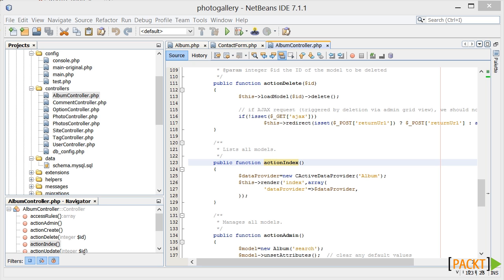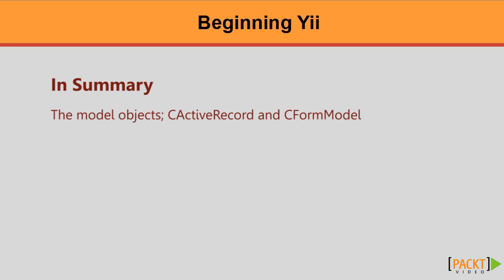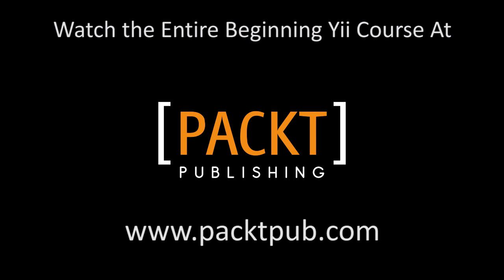The view can then iterate through the records itself. So in this session, we've been introduced to the data model and its two data objects: the CActiveRecord and the CFormModel. And in our next session, we'll see how the active record object is used in real life. Thanks for listening.